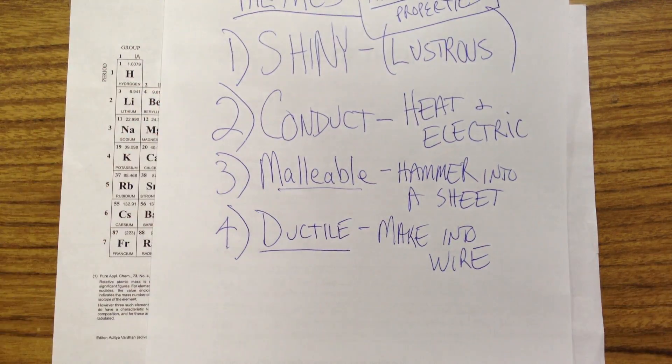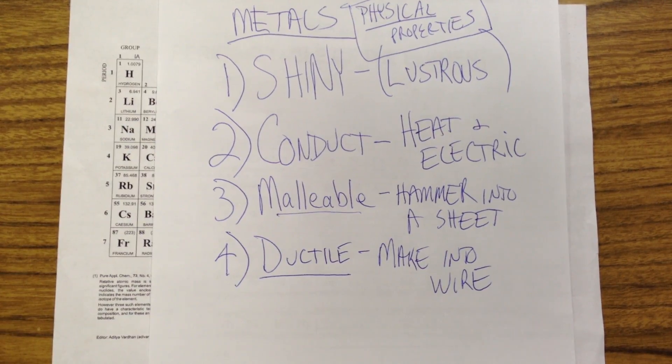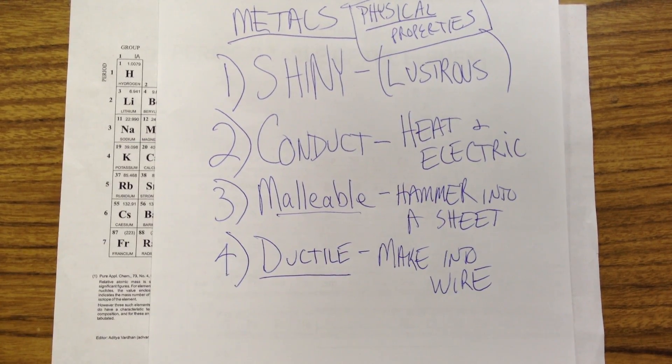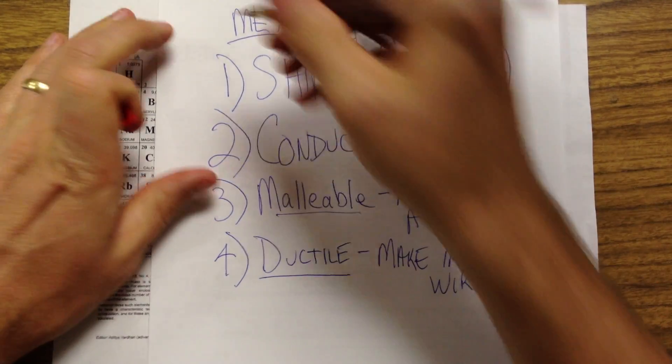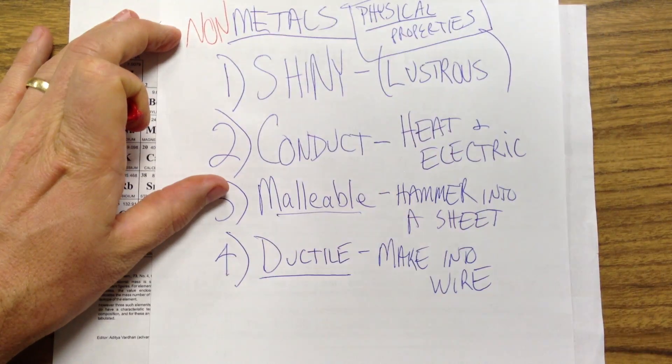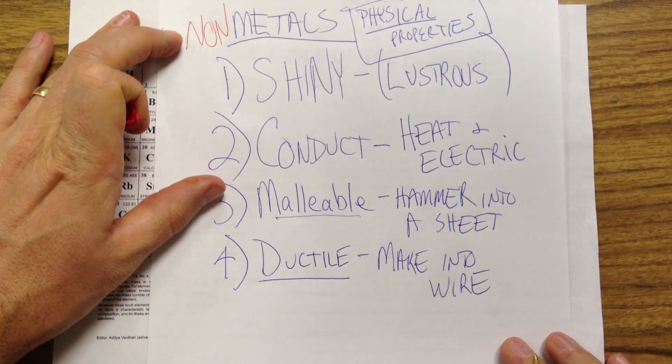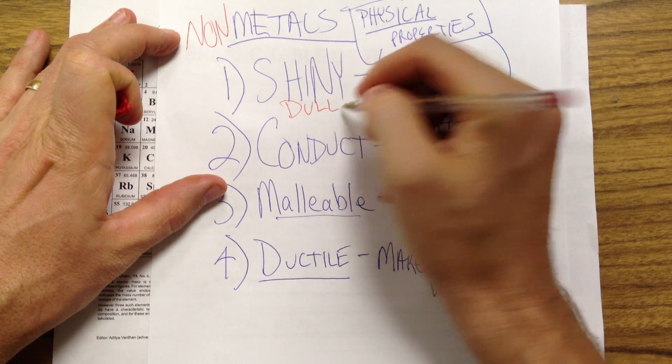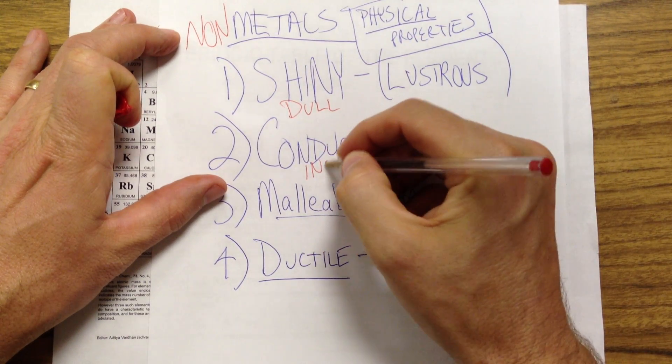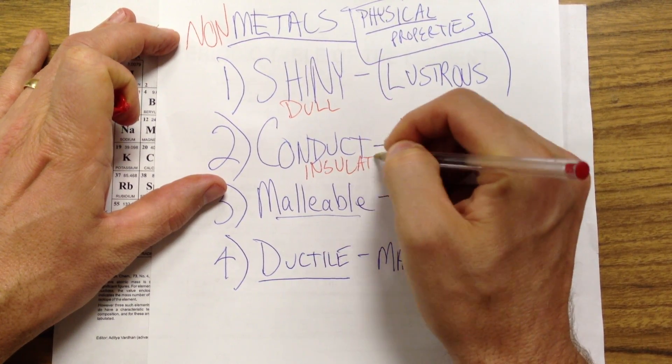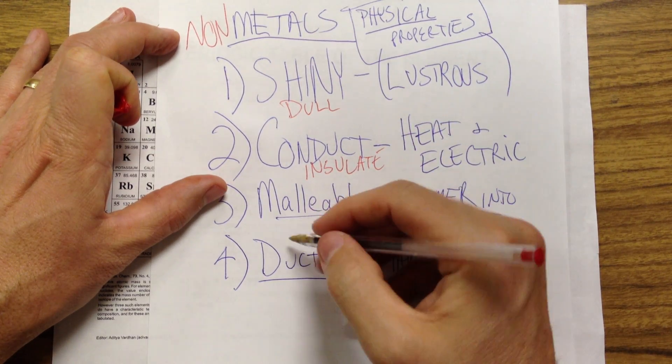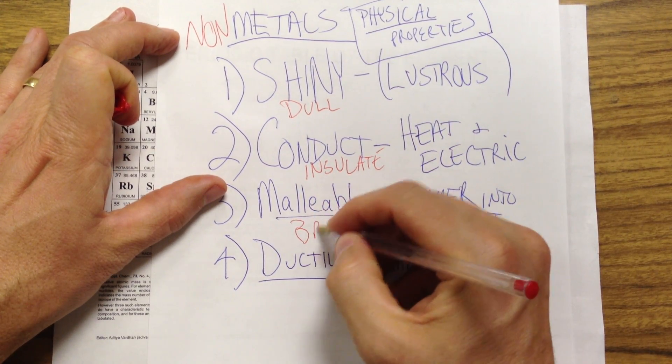Non-metals, which I'll do on the same paper, only in a different color. We use red for non-metals. So non-metals are the opposite of all these things. They're not shiny, they're dull. They don't conduct, they insulate. They're not malleable, they're not ductile, they are brittle.